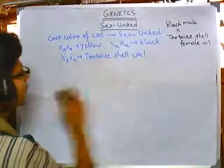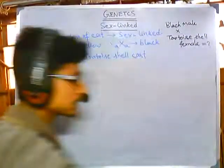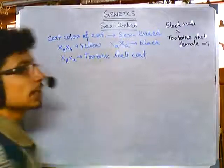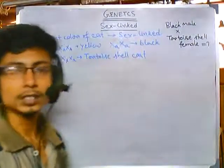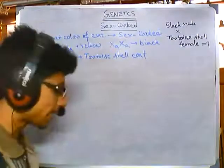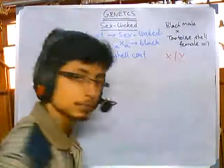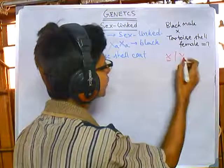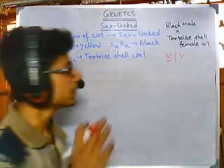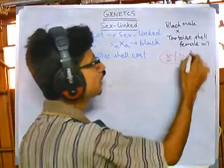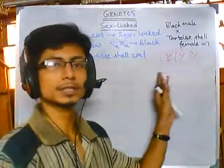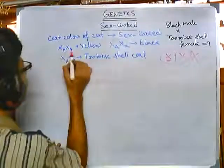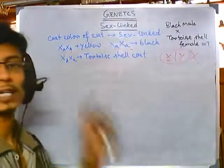Homozygous dominant means both alleles are caps A; recessive means both are small a. We need to look at female cats, because male cats have only one X and one Y. This gene is present on only one X chromosome in males, so males cannot be homozygous or heterozygous — they are hemizygous.